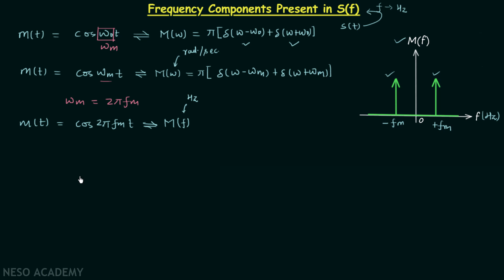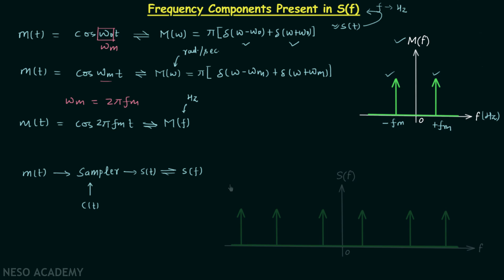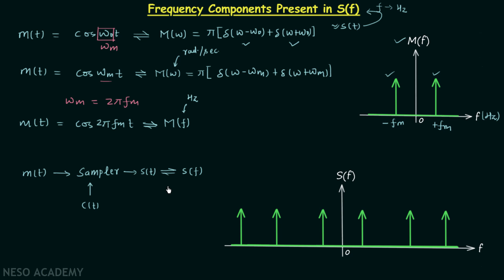We performed the complete analysis of the sampling process: MT is provided to a device known as a sampler, along with a periodic impulse train CT, and the output is ST, the sampled signal. ST has the Fourier transform SF when frequency is in hertz, and its waveform is obtained from the derivation done in the first lecture on the Fourier transform of the sampled signal.